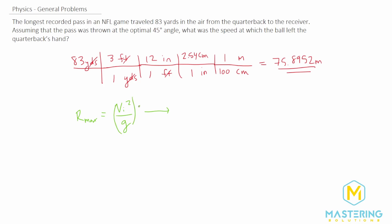So let's multiply both sides by g. So the initial velocity squared is equal to r max times gravity. And then we'll take the square root of both sides. So the initial velocity is equal to the square root of the maximum range times gravity.